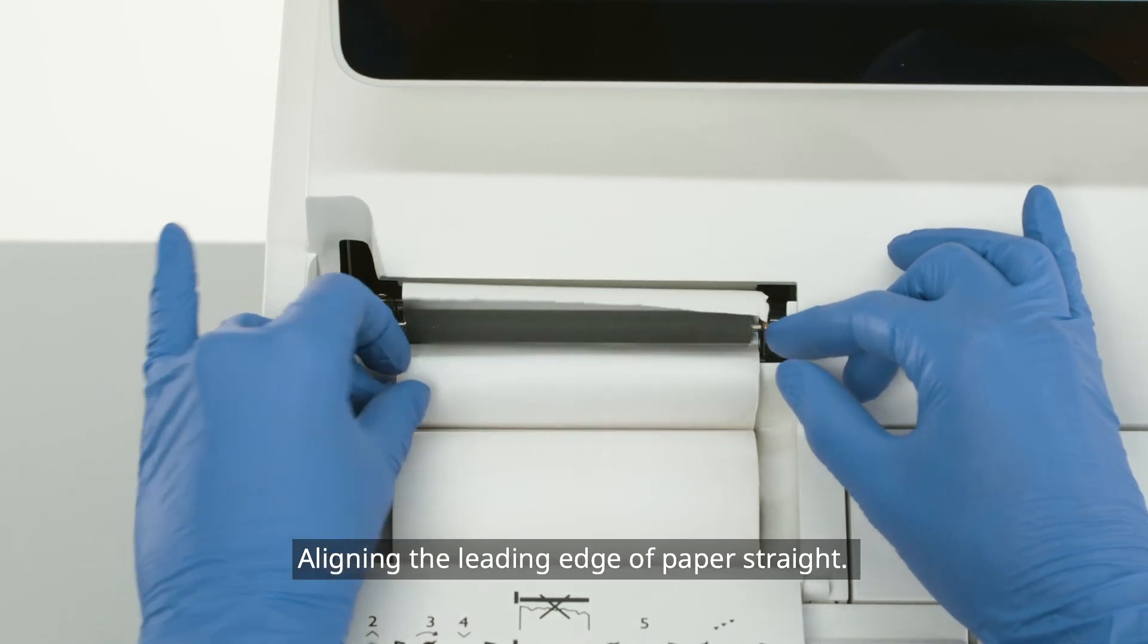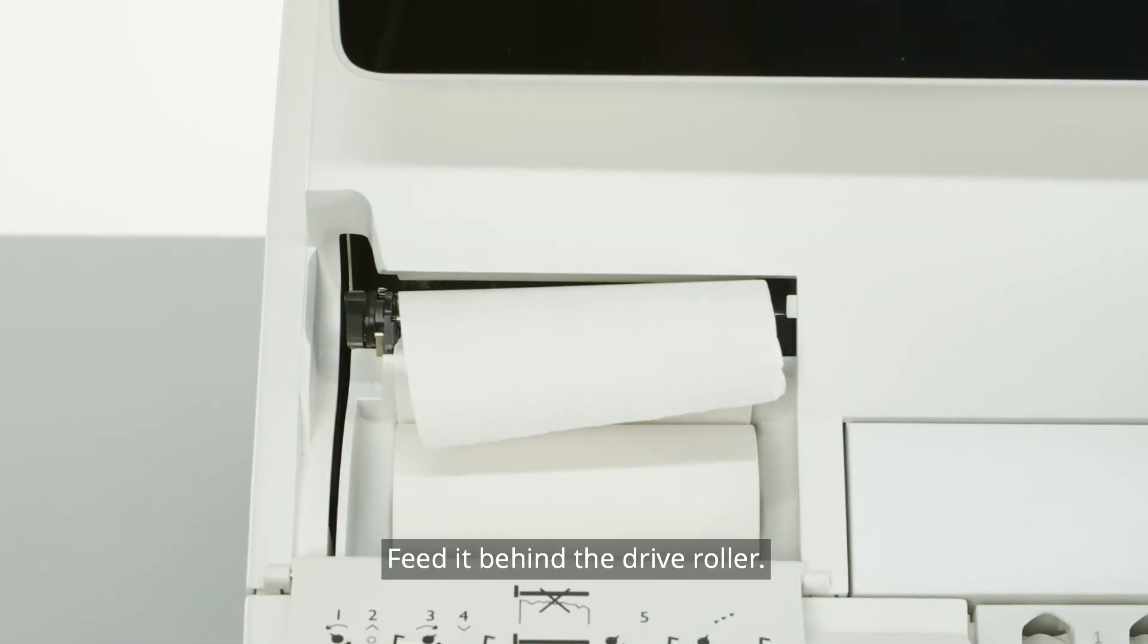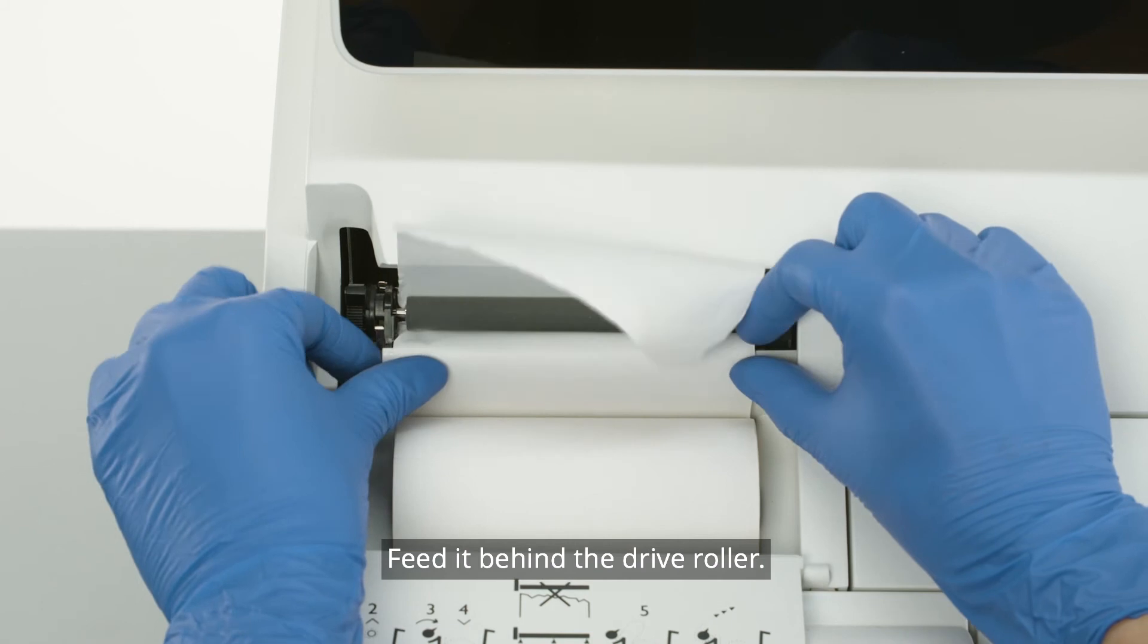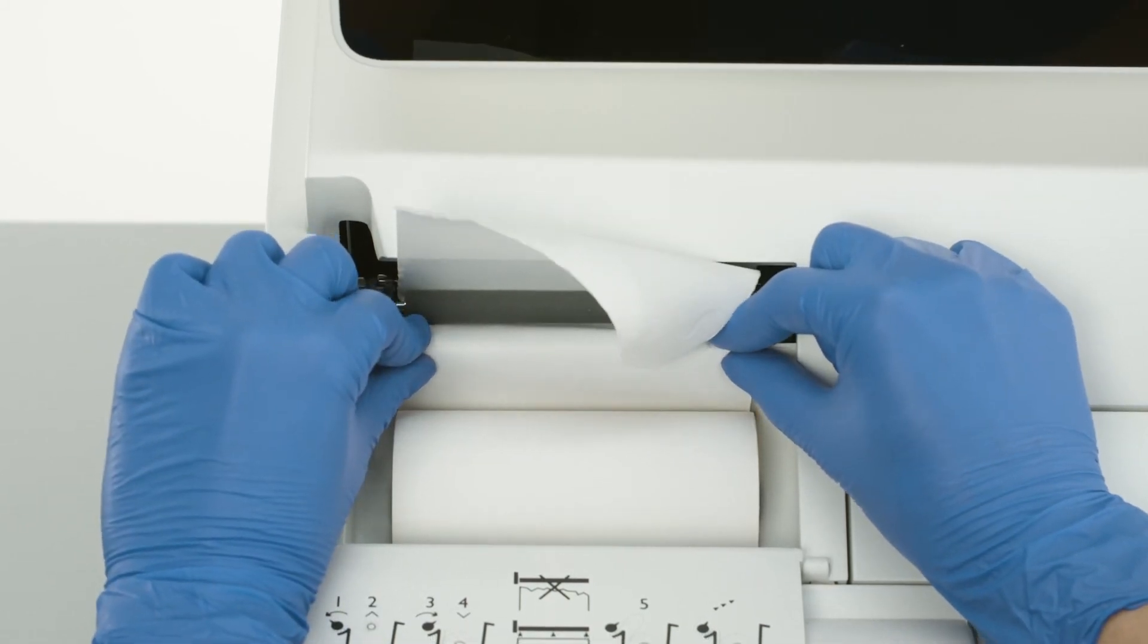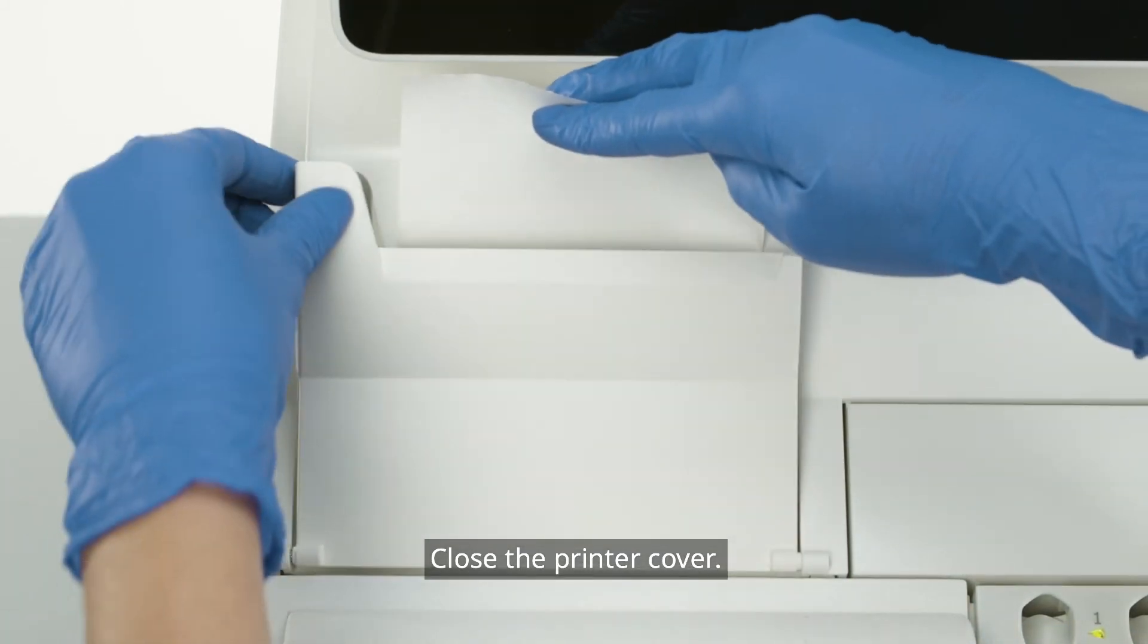Align the leading edge of the paper straight. Feed it behind the drive roller. Close the printer cover.